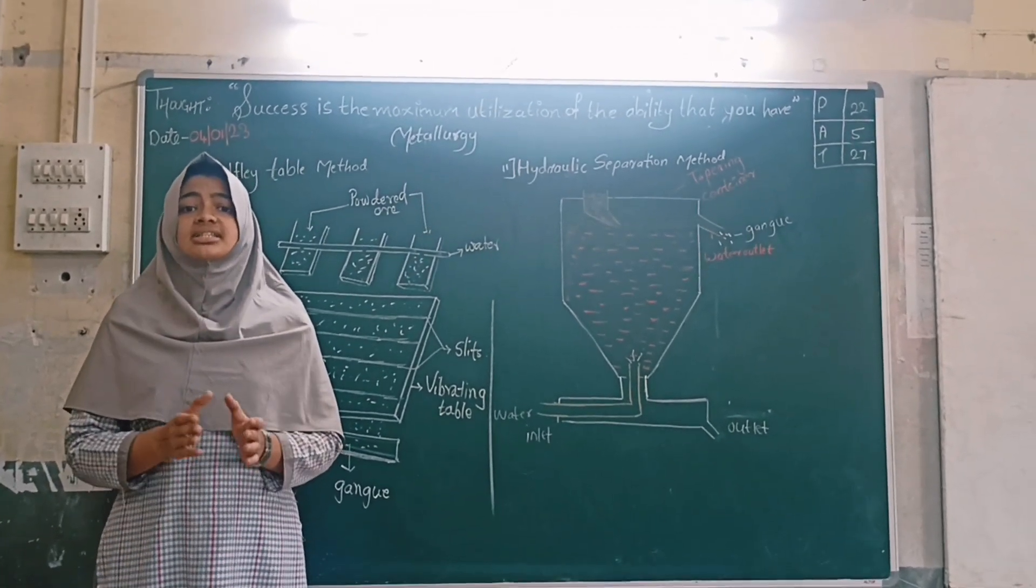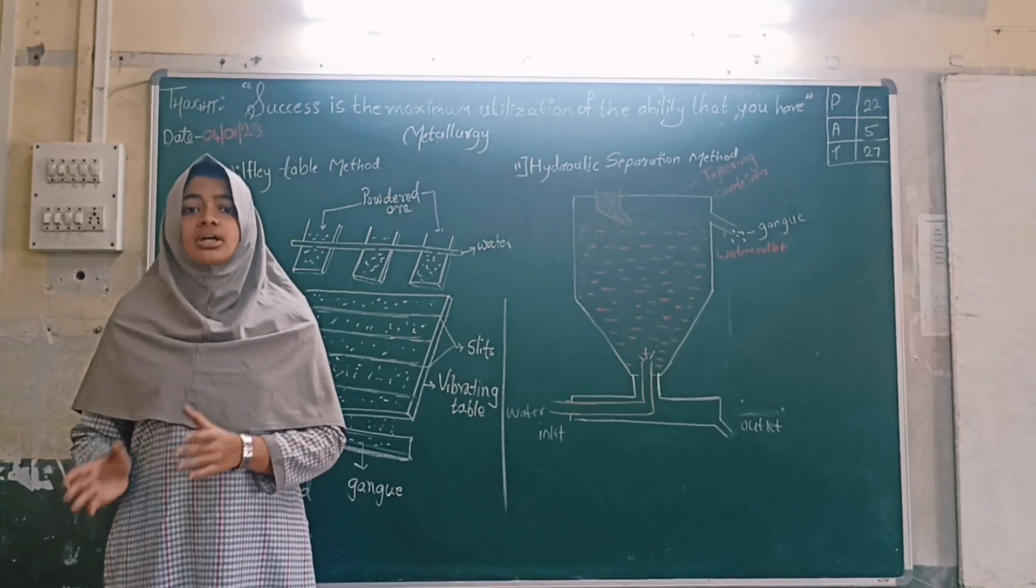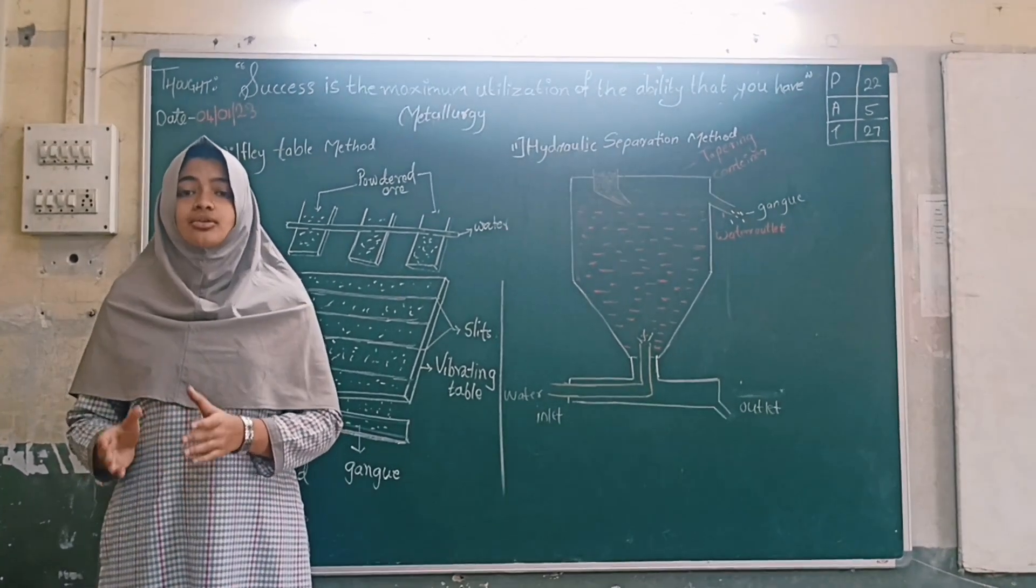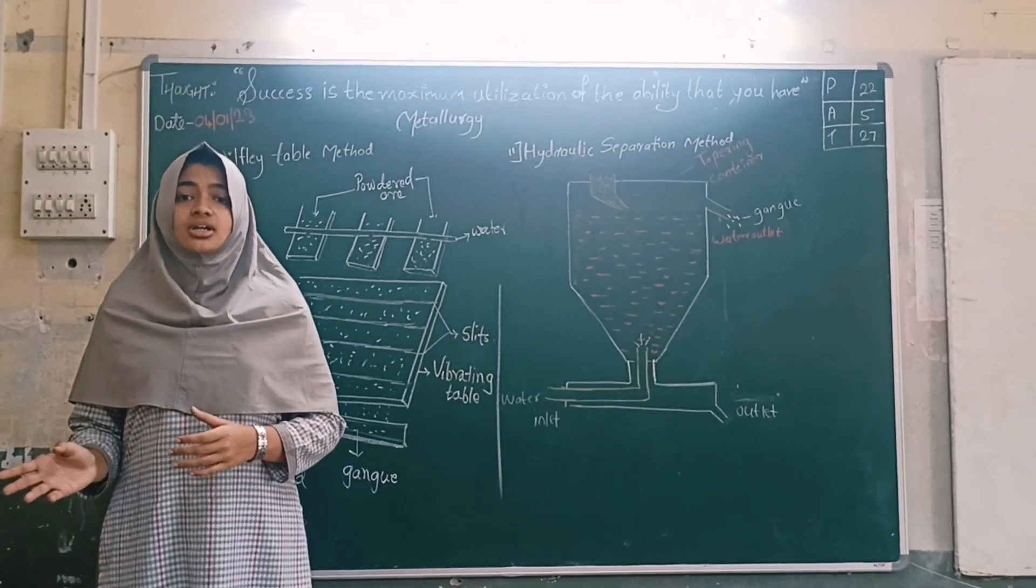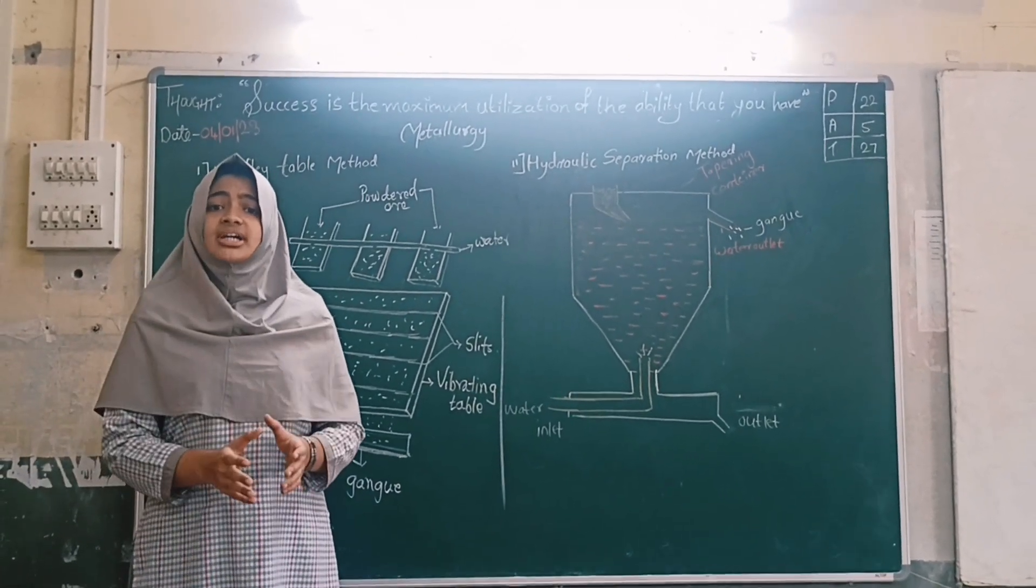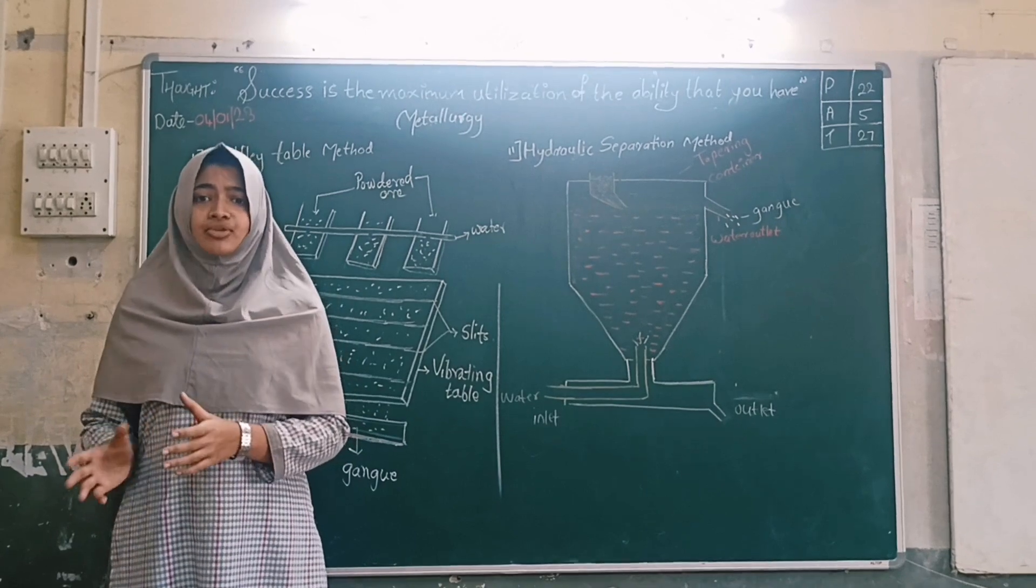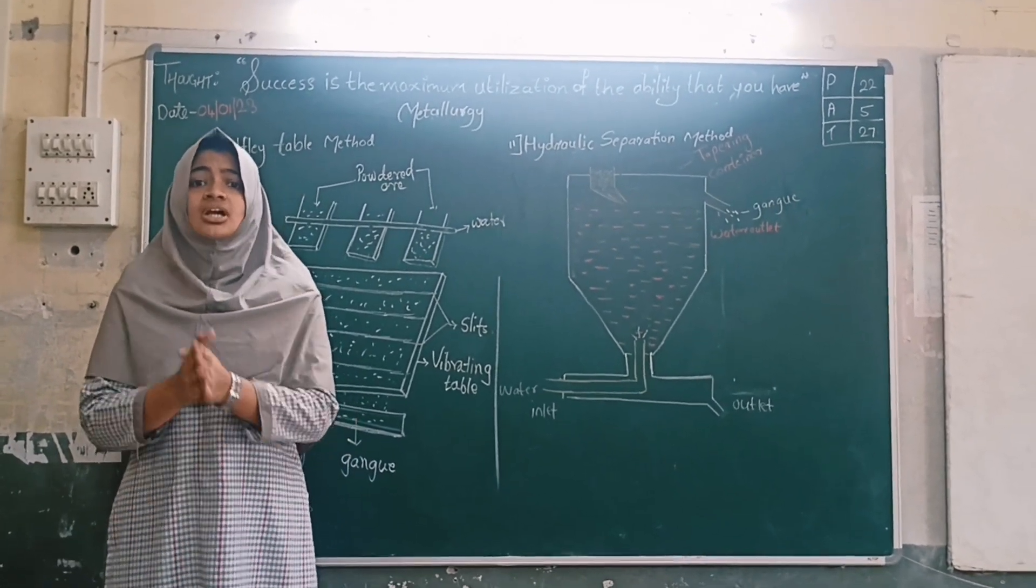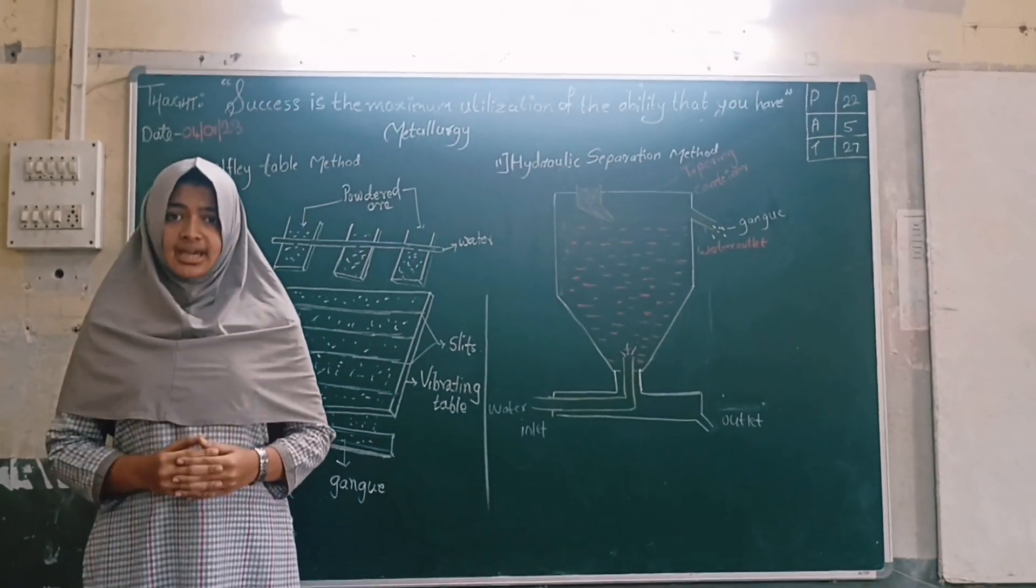And the minerals that can be separated from the impurities are called ore. The ore contains many types of impurities such as sand, soil, rocks, etc. These impurities are called gangue.